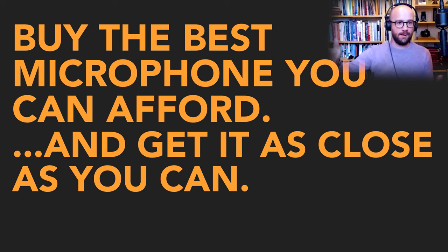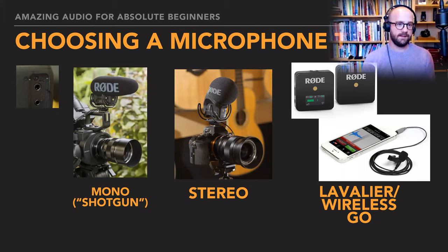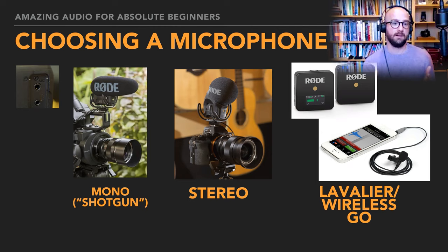Perhaps not the world's problems, but certainly your audio problems can be solved by getting the mic close. So how do we get mics close? This is where we start choosing a microphone. Very likely on the side of your camera is a little 3.5mm jack input — the headphone-type socket labeled 'mic' — and the solutions we're going to look at today are designed for that type of input.